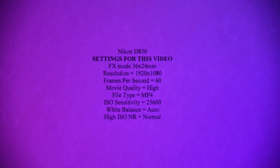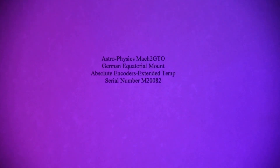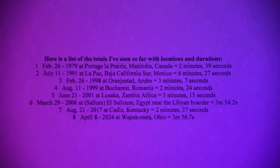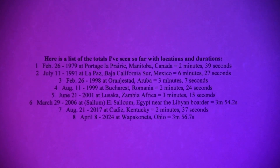Here are the settings that I used in the making of this total solar eclipse video — you can pause this to see what they were. Here is information on the telescope that I used, and here is information on the telescope mount that I used. Here we see a list of the eight total solar eclipses that I've been blessed to see so far — you can pause this video to get the information on each one in chronological order.